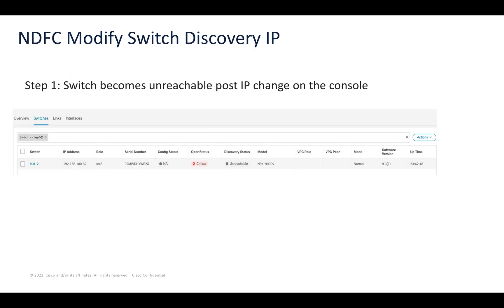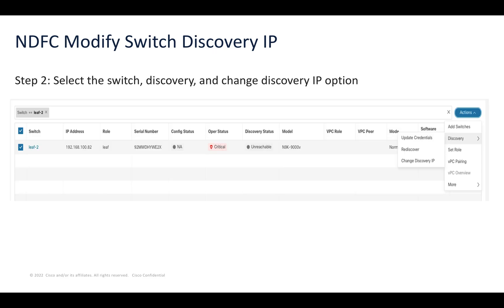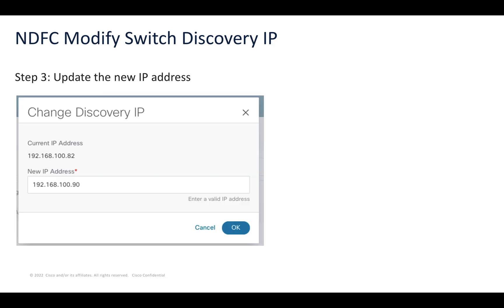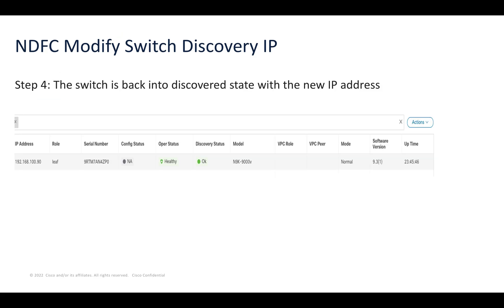Log into the switch directly via the console port and first make this IP address change on the switch. When we do that, in a couple of seconds we're going to see that the switch itself becomes unreachable in NDFC because the IP address has already changed. We then select the switch, go into Actions, go to Discovery, and change the discovery IP itself, updating it from 100.82 to 100.90. Once we've done that, the switch will go back into normal operation mode.